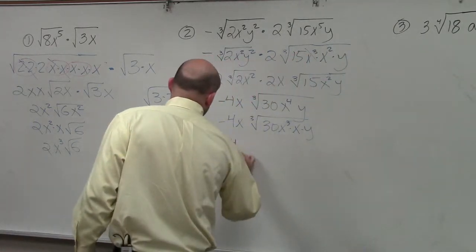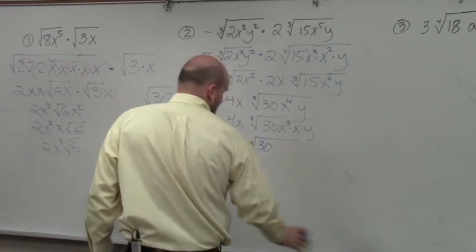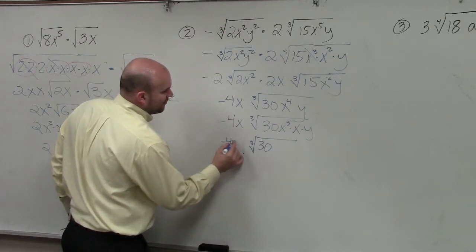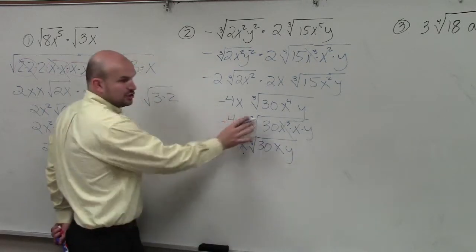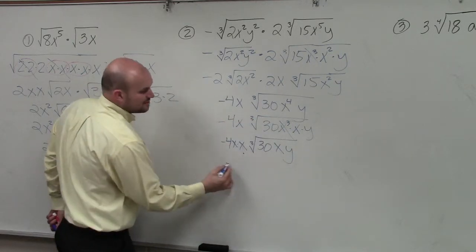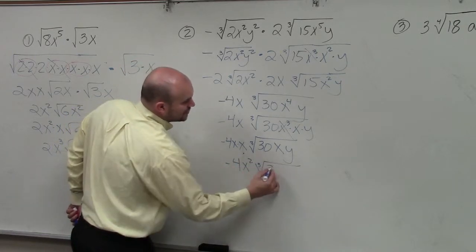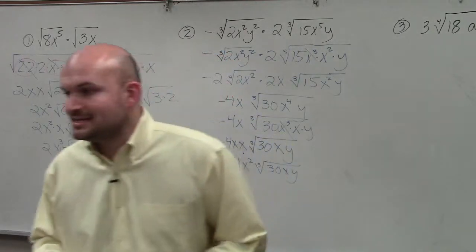So my final answer is negative 4x times the cube root of third. Oops, sorry. x cubed is equal to x, right? So negative 4x times x, 30 times xy. Because the cube root of x cubed is x. So my final answer is negative 4x squared times the cube root of 30xy. Now I cannot simplify these any further.